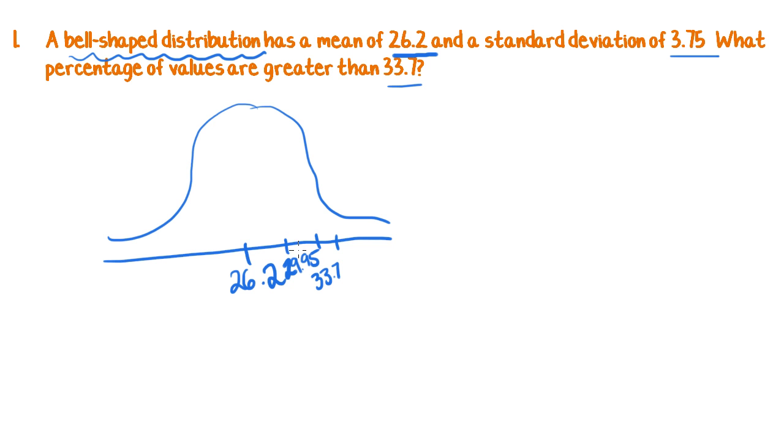So now I've gone two standard deviations up and I've hit this number that I'm looking for. So we want to know what percentage of values are greater than 33.7. Well, if I've traveled two standard deviations either side, I'm talking about there being 95% of data values in the middle,